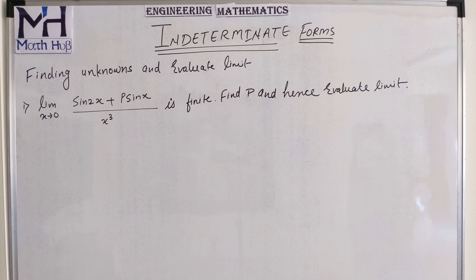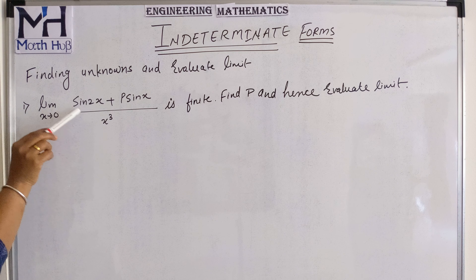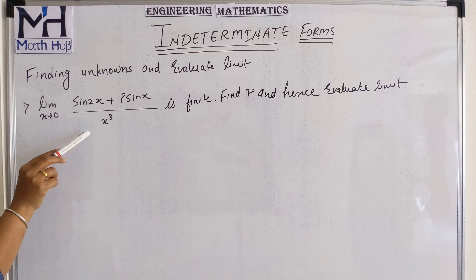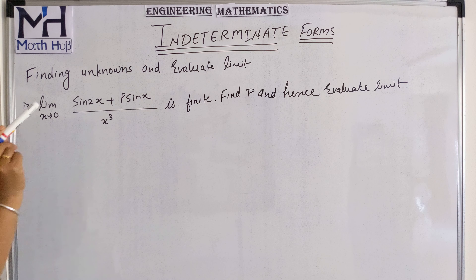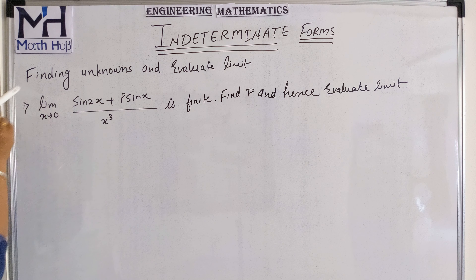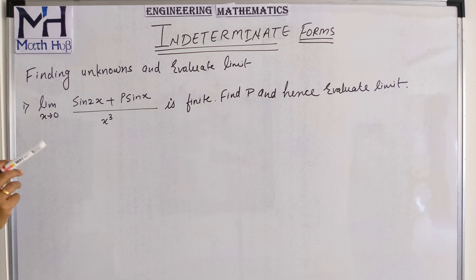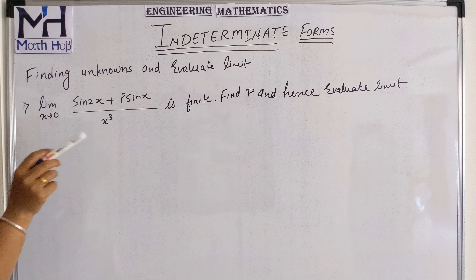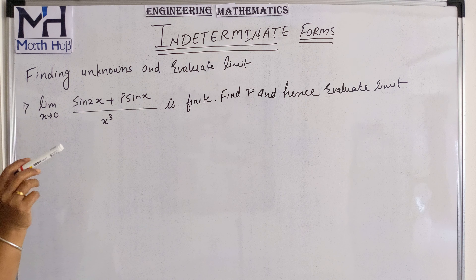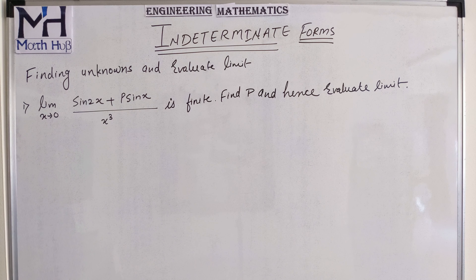Let's start the question. They have given: limit x tends to 0 of (sin 2x + p·sin x) divided by x cubed is finite. They have given that the value of this function is a finite number. And hence find the value of p and evaluate the limit.